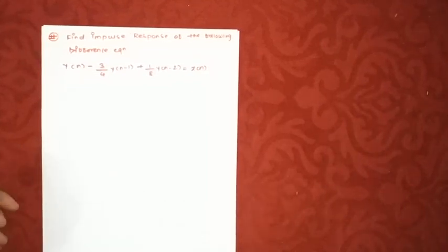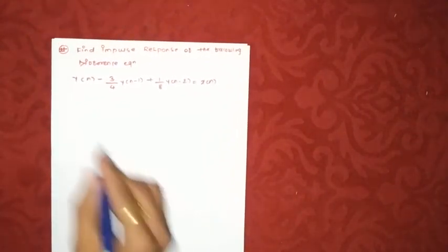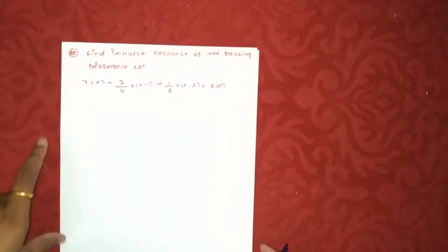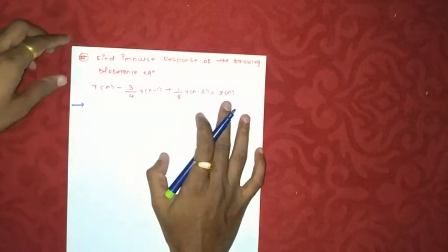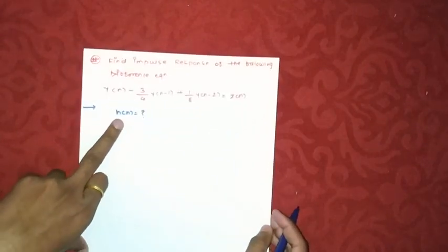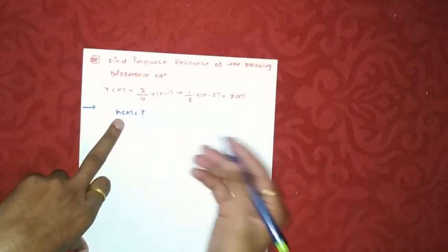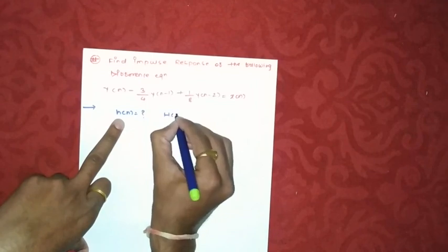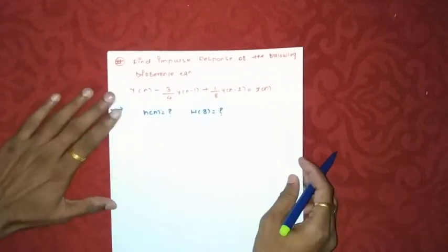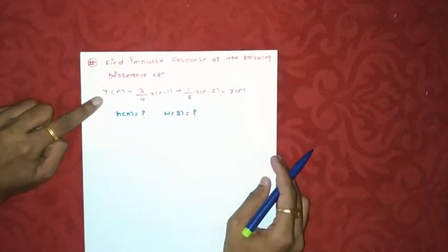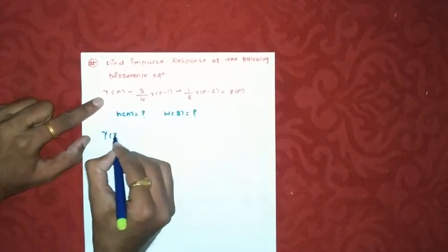Now let us take one more example: find the impulse response of the following difference equation. Such problems are commonly asked in university examinations for six or seven marks. This is a difference equation relating output with input, and we need to find h(n). Finding h(n) directly in the time domain is complex, so we first find H(z) and then convert to h(n).